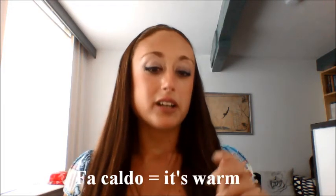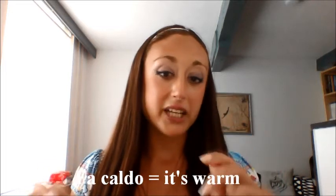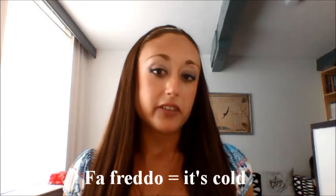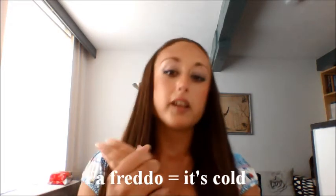Let's start with the temperature. To say that it's warm, we say 'fa caldo,' which literally means 'it makes warm.' 'Fa' is the third person singular in the present of the verb 'fare,' which is irregular. Then, it's cold in Italian is 'fa freddo,' which is literally 'it makes cold.' In Italian we use a different verb for temperature conditions than in English, because in English you simply use the verb to be, but that's not the case in Italian.